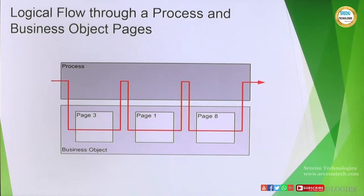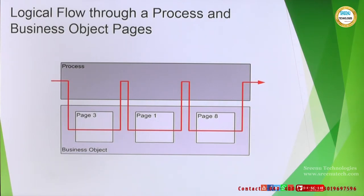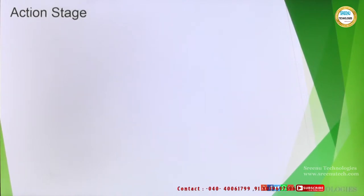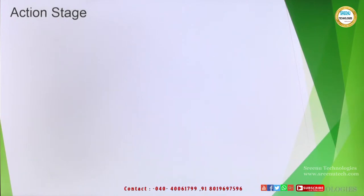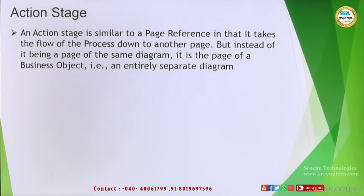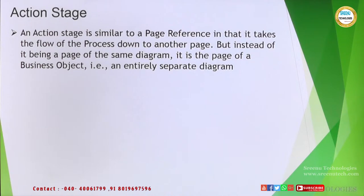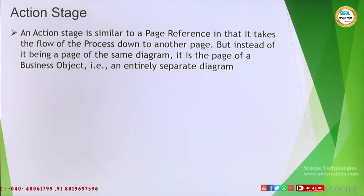From a process perspective, default execution will be the main page, and we cannot execute individually by default. But if it is an action stage, every page in a business object — every action in a business object — can be called independently. This is the thumb rule. So how we call an action or a page which is in a business object from a process is by using an action stage. The action stage is similar to a page reference in that it takes the flow of the process to another page, but instead of being a page of the same diagram, it is the page of a business object — an entirely separate diagram.